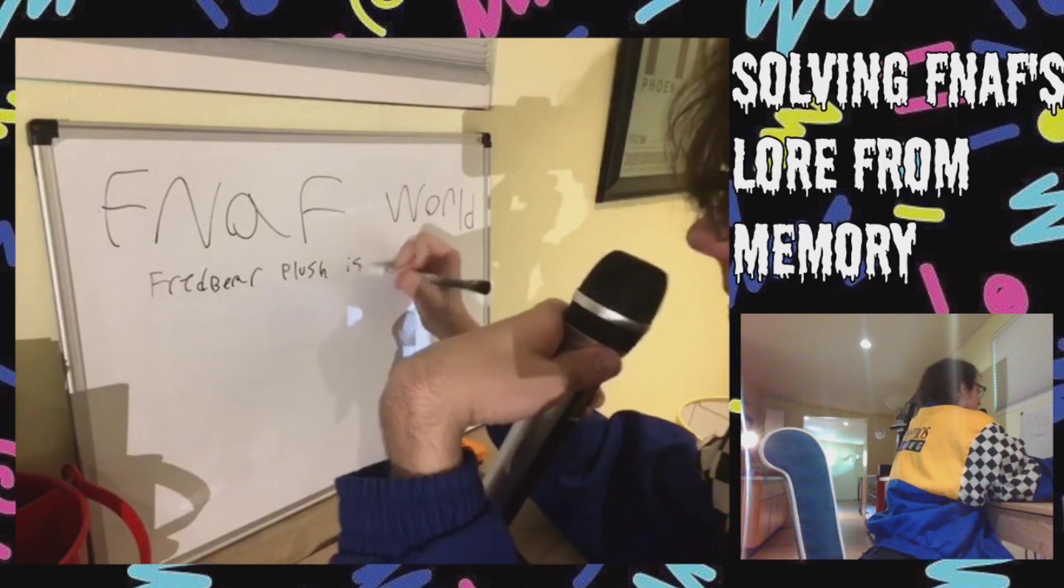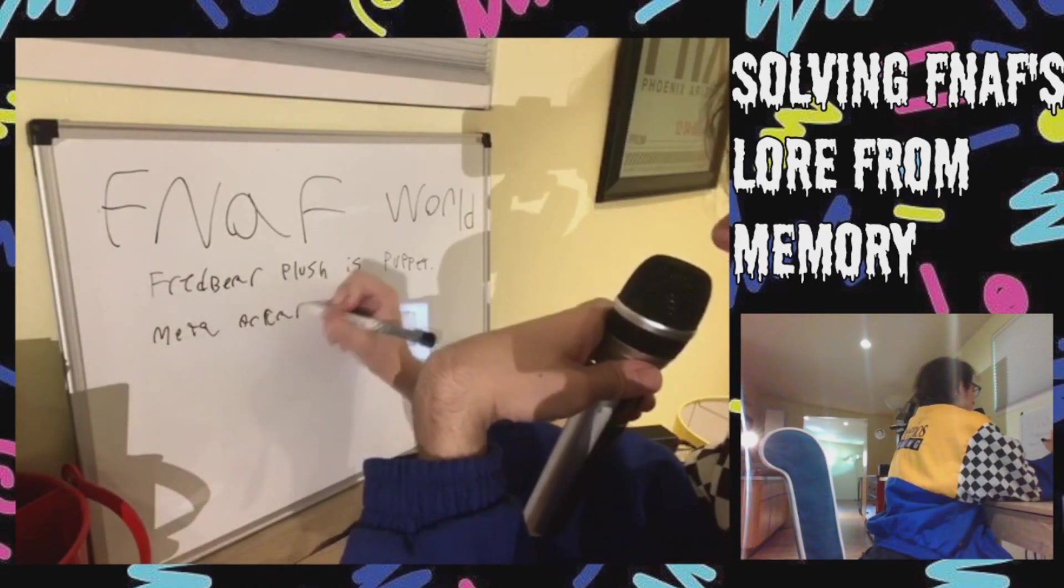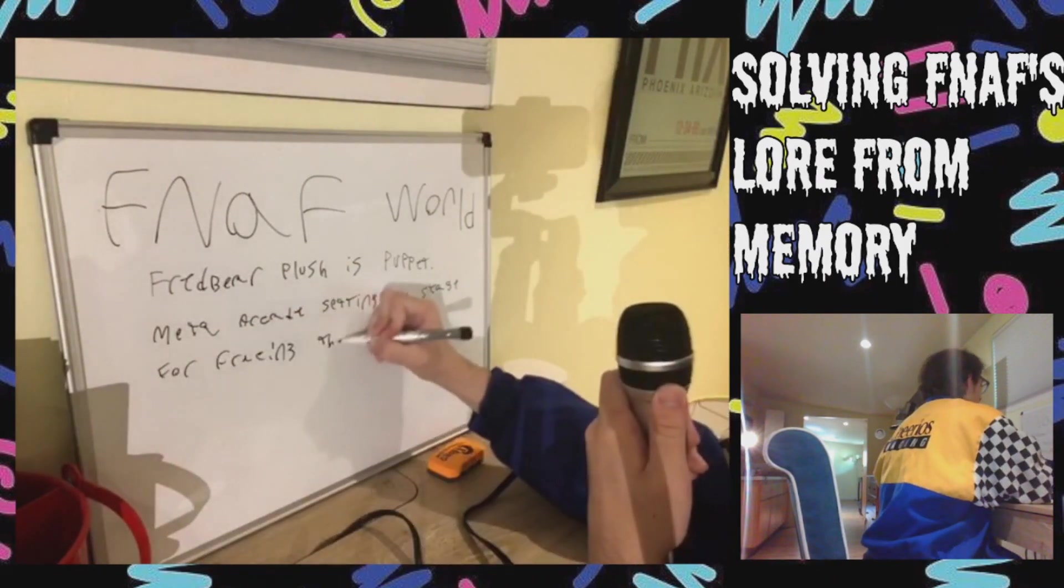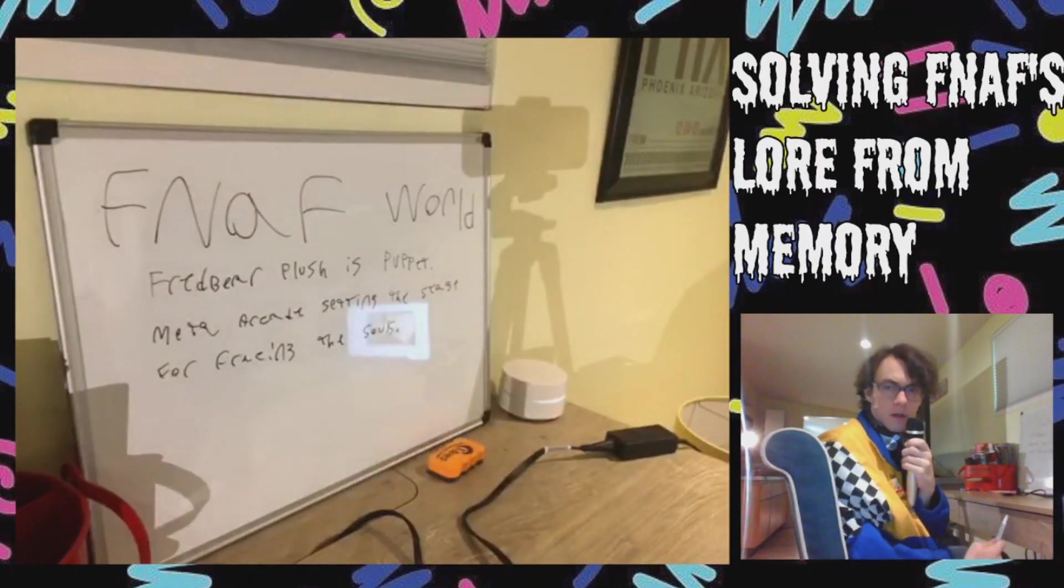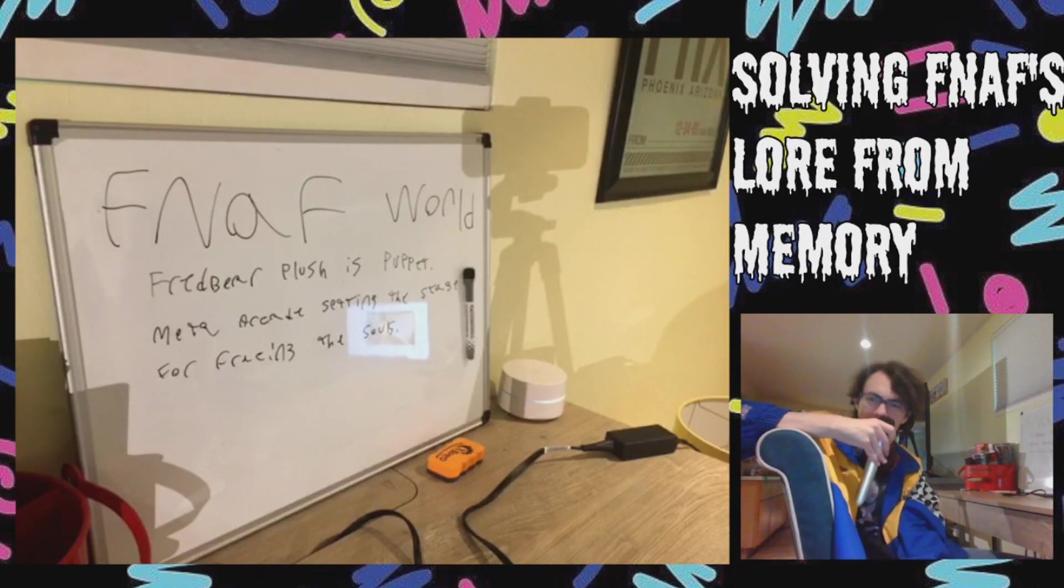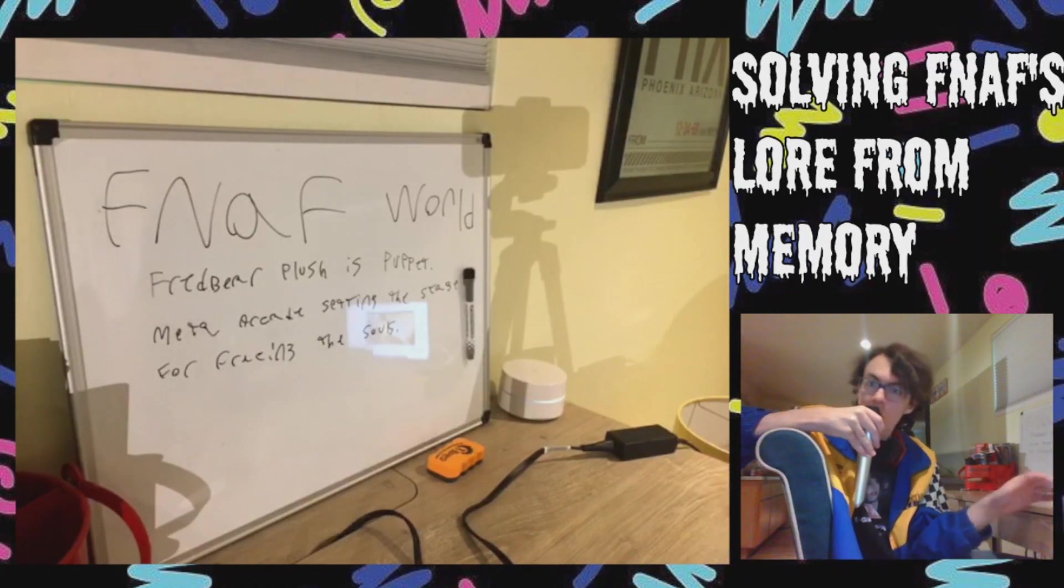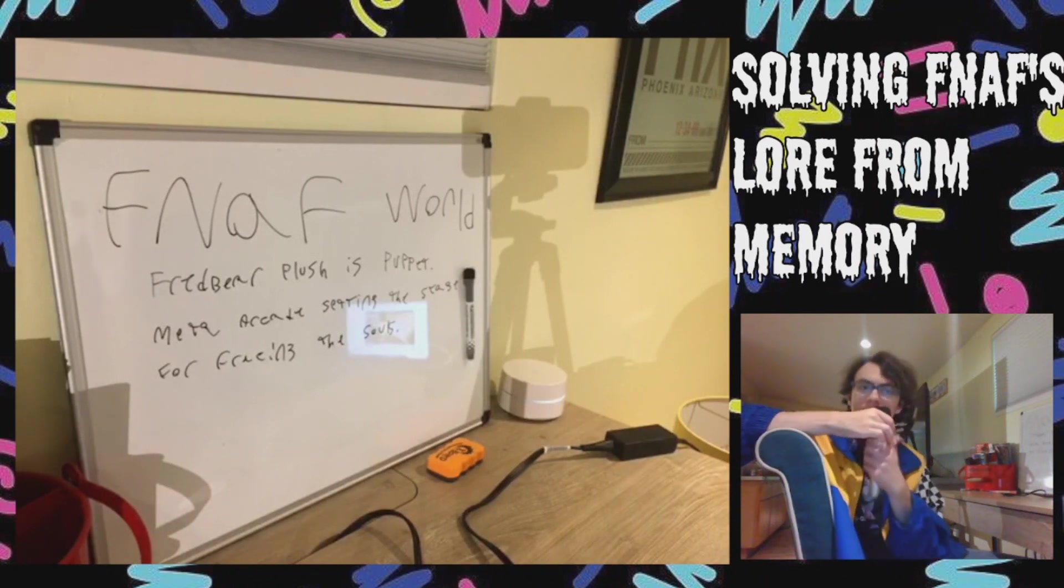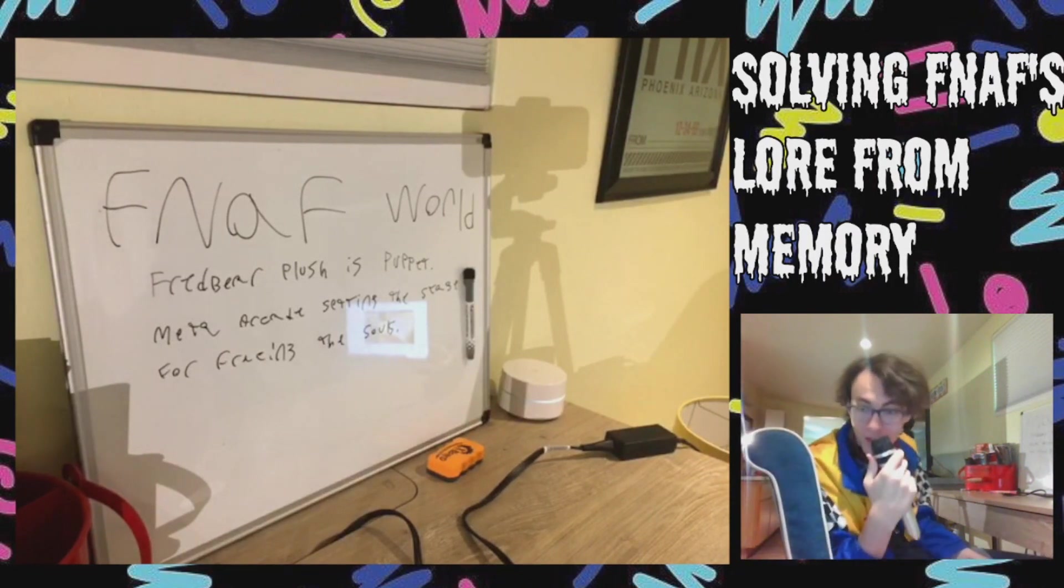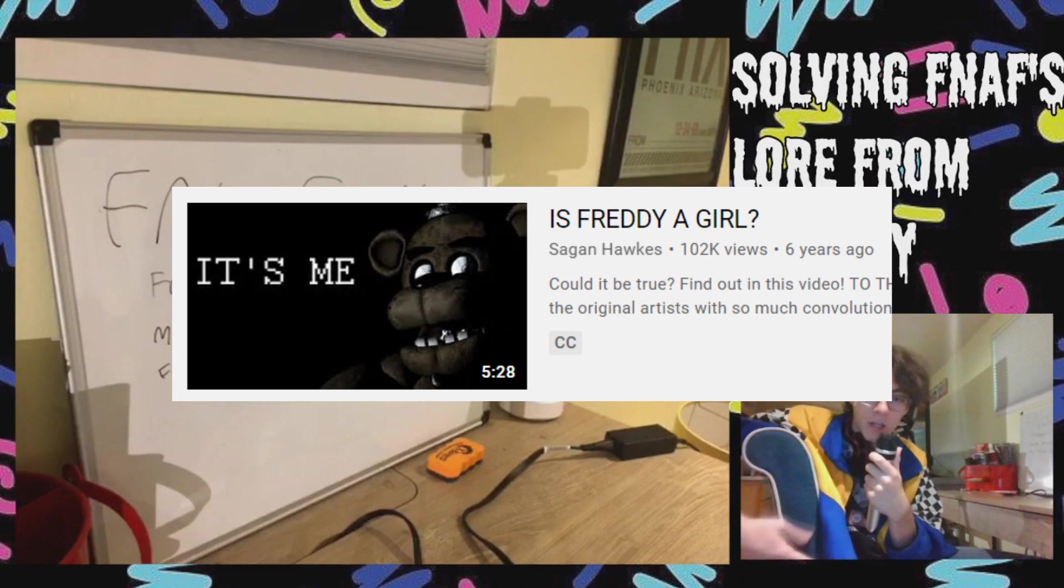The Fredbear plush is the puppet. You're setting the pieces up through an arcade game. So meta arcade for freeing the souls. I think that's what happens with the clock ending. Also, Fritz Smith could be phone guy. Seventh night you play as him. No phone call. That actually makes sense because there's no phone call. Doesn't he say at some point that he's gonna take over the job? He's switching the FNAF 2 guard to the day shift. And that is when people think the Bite of 87 happens. And then he's gonna take over the job. So do we have a name for phone guy then?